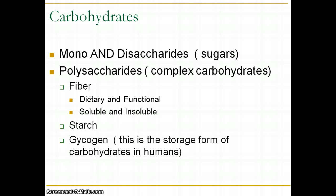Make sure to cover in your book the difference between mono-, di-, and polysaccharides. Also read up on dietary fiber versus functional fiber, and soluble versus insoluble fiber — these are all very important. Starch and complex carbohydrates are, for the most part, used interchangeably. Note there's a typo in this slide — it should say glycogen, not 'gycogen.' Glycogen is the storage form of carbohydrates in humans, stored in our muscles and liver.